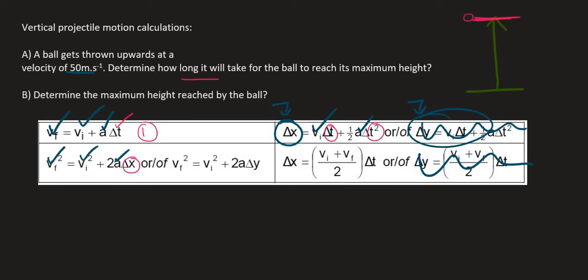Okay, so we are looking for time. So you could use this equation or this equation. Whoops, I just realized we don't actually have the distance, so we can't use this one. So the only one that we're actually going to use is this first one. And so we can write it out as VF equals VI plus A change in time.